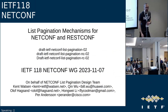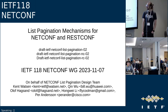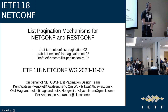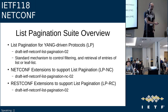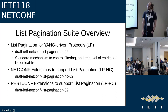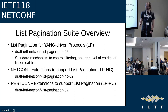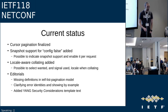Per Andersson (Cisco) presents an update on the list pagination mechanisms draft for NETCONF and RESTCONF, now at version 02. There is one draft defining the mechanisms (filtering, etc.) for lists and leaf-lists, and separate protocol drafts for NETCONF and RESTCONF. Current status: cursor-based pagination is finalized; snapshot support for config-false has been added; locale-aware sorting/collating has been added; and various editorial fixes have been made.